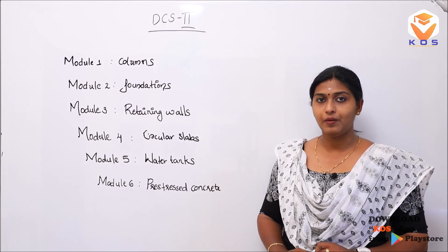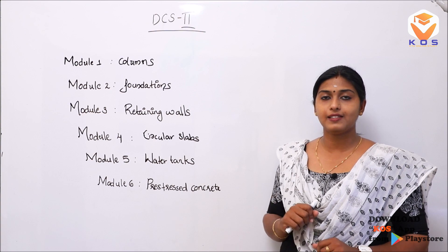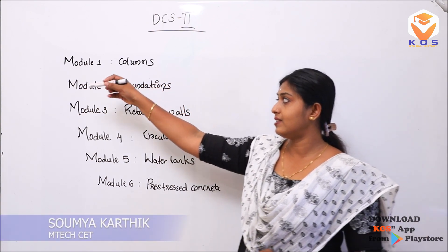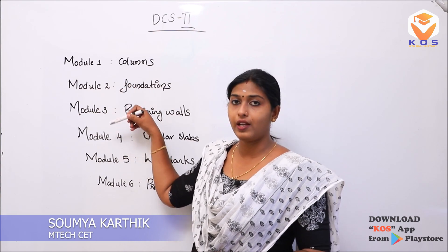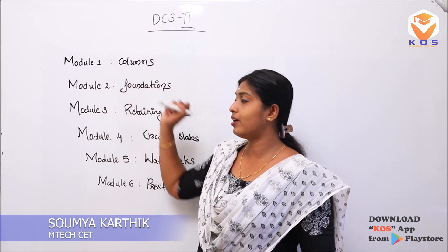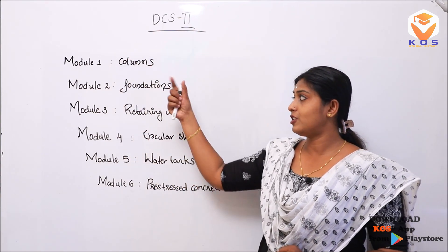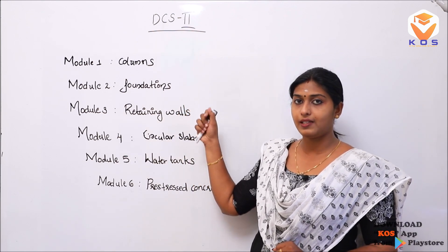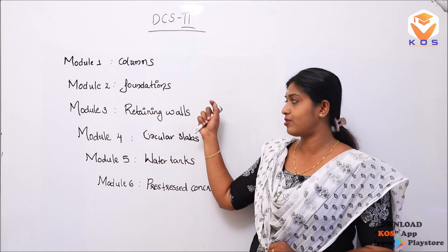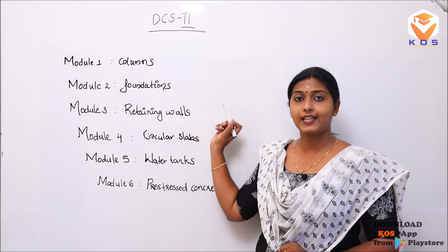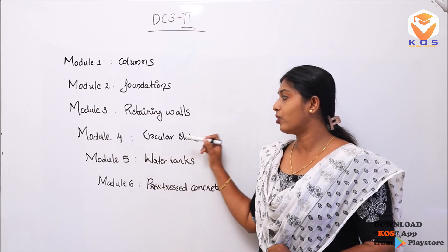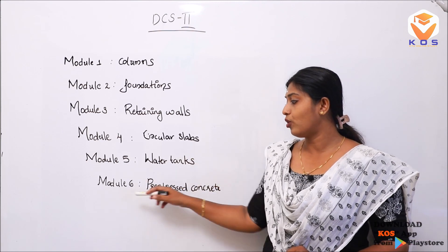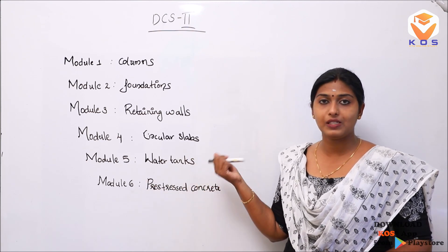Welcome to KTU Online Study App. We are starting the subject DCS, second portion. This is the first module. The 1st module is called design, 2nd module is called foundation, 3rd module is called retaining wall design, 4th module is called circular slabs, 5th module deals with water tanks, and 6th module is pre-stressed concrete.